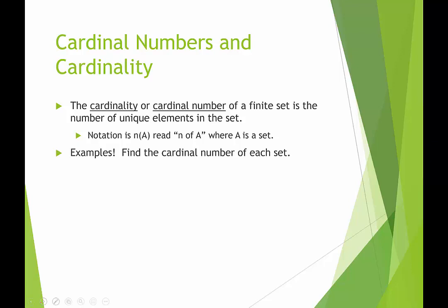Let's look at some examples. We want to find the cardinal number of each set. Set B, we have {1, 4, 9, 16, 25, and 36}. So that's 1, 2, 3, 4, 5, 6 elements. So we would say the cardinality, or n(B), is equal to 6.